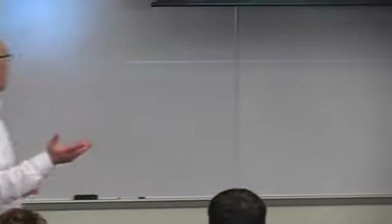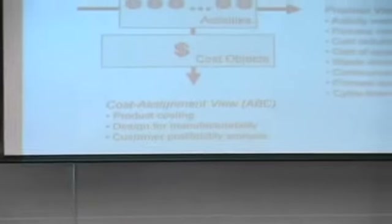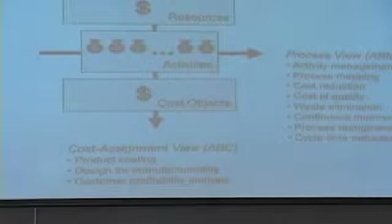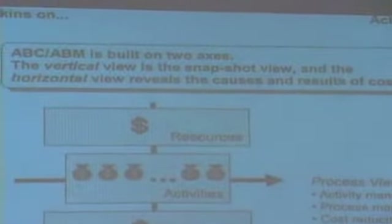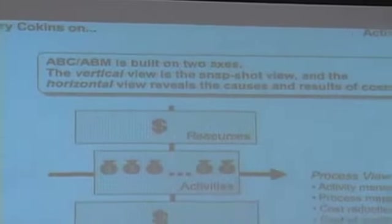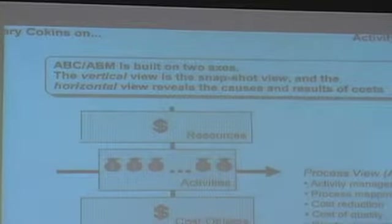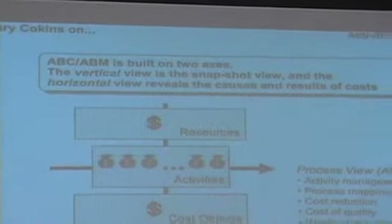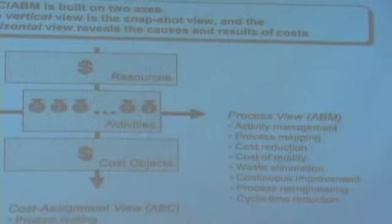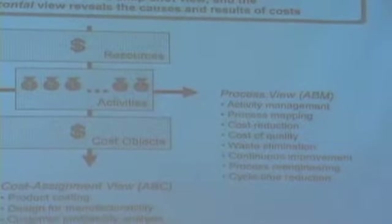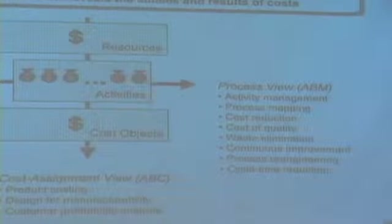Left to right is activity-based management. Cycle time reduction on the right includes - let's see if we can help Jim make them faster, because faster would occupy less of his time, it'd be cheaper. And then cost objects top to bottom - here we can determine product cost, which is traditionally what we think about using it for. But we can also determine customer profitability analysis.